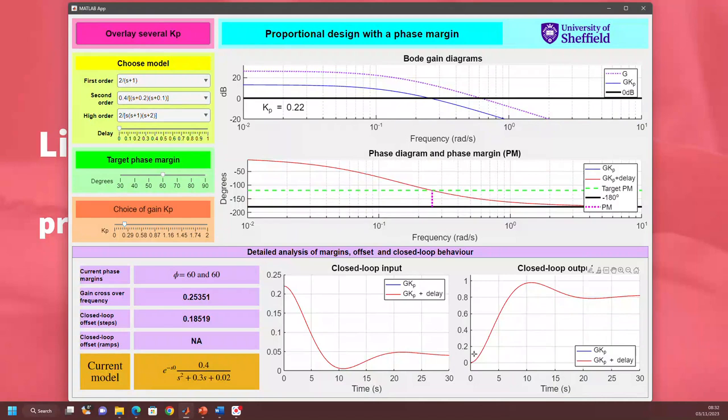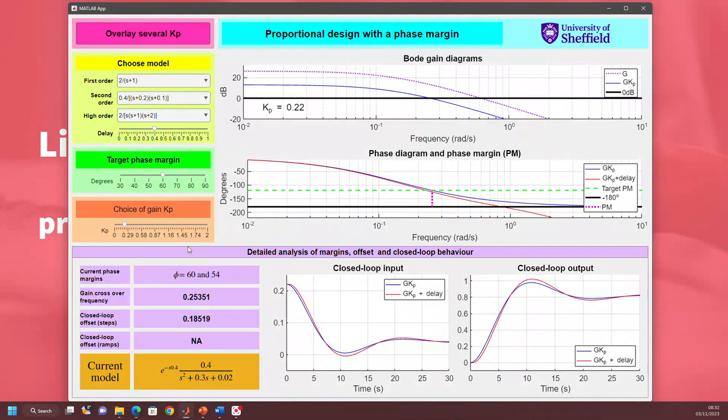Now, you can add a delay if you want. So let's add a delay with this yellow slider. And what impact does a delay have on the behavior? So you can see as the delay increases, the closed loop behavior starts to get slightly more oscillatory, slightly underdamped. And you'll see here the phase margin begins to reduce.